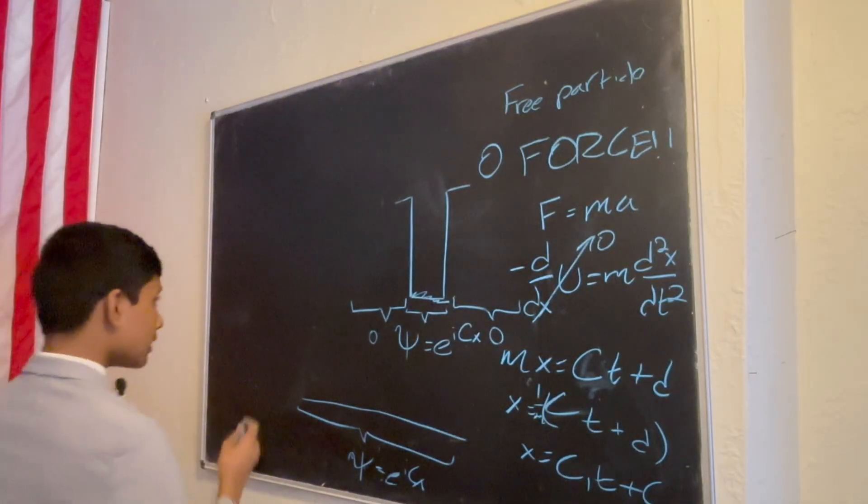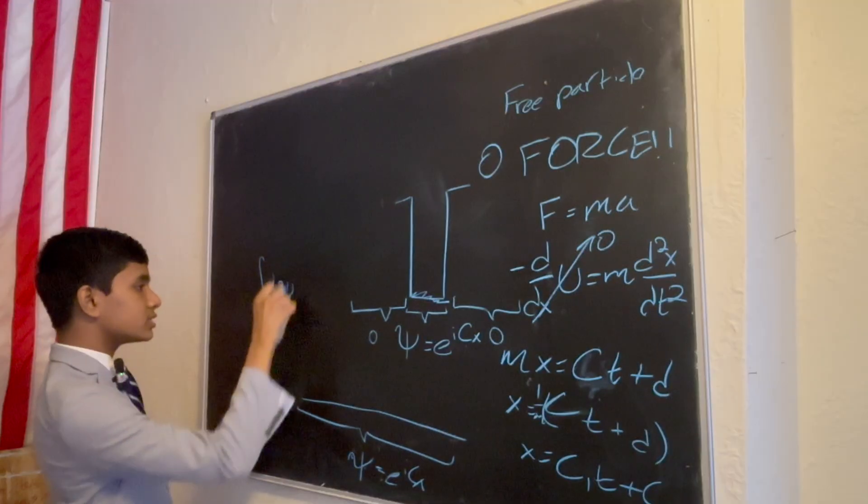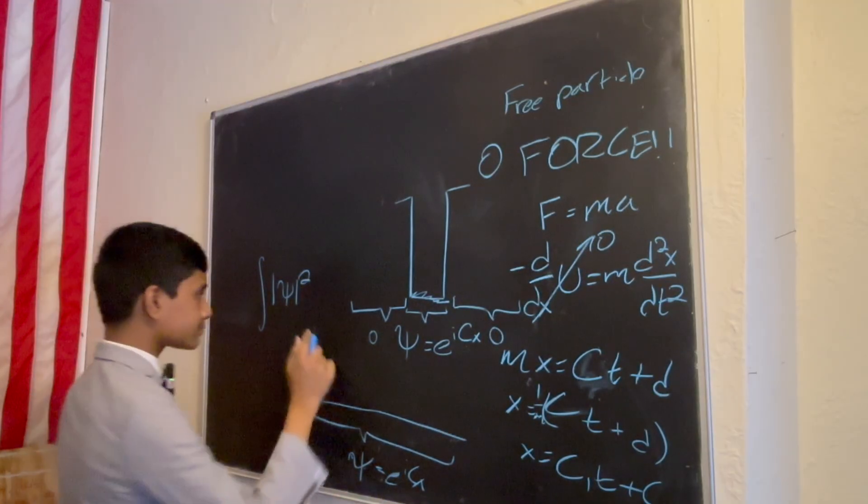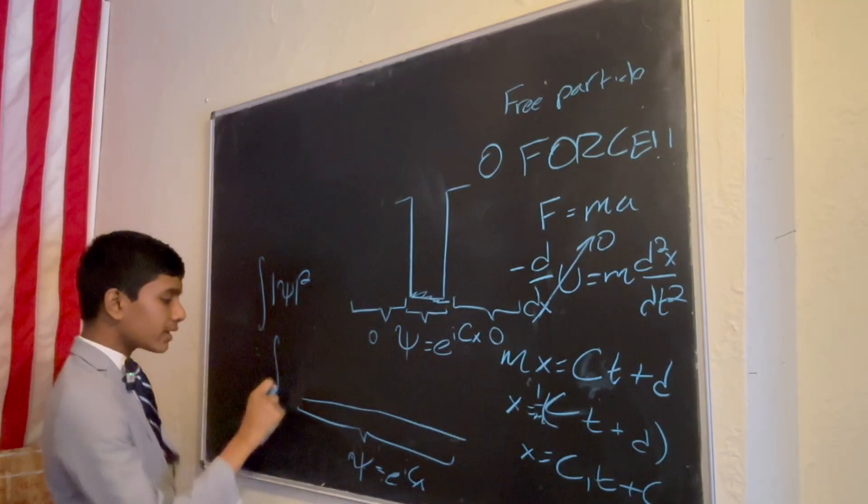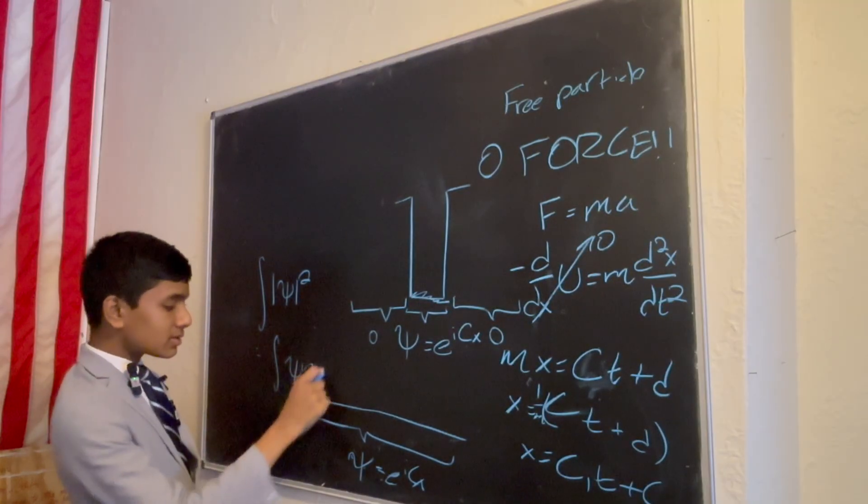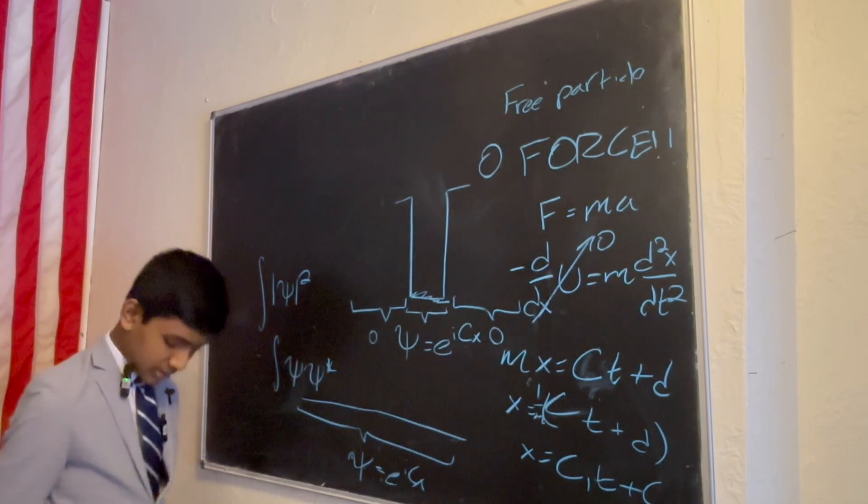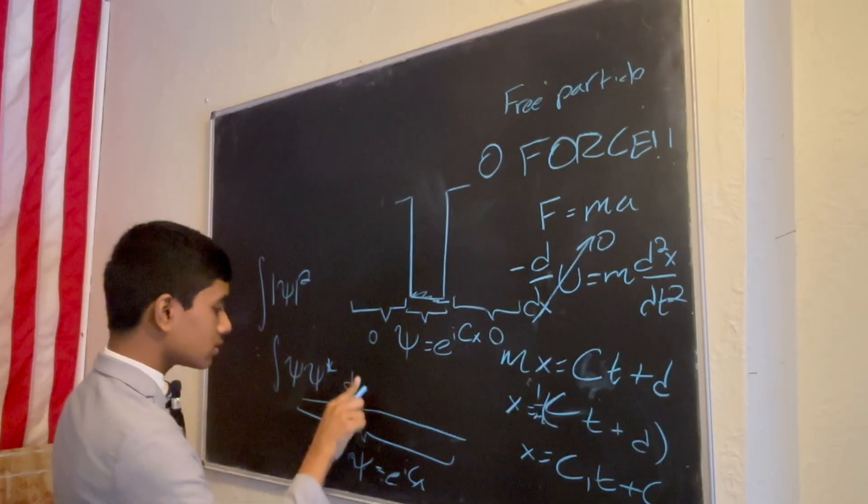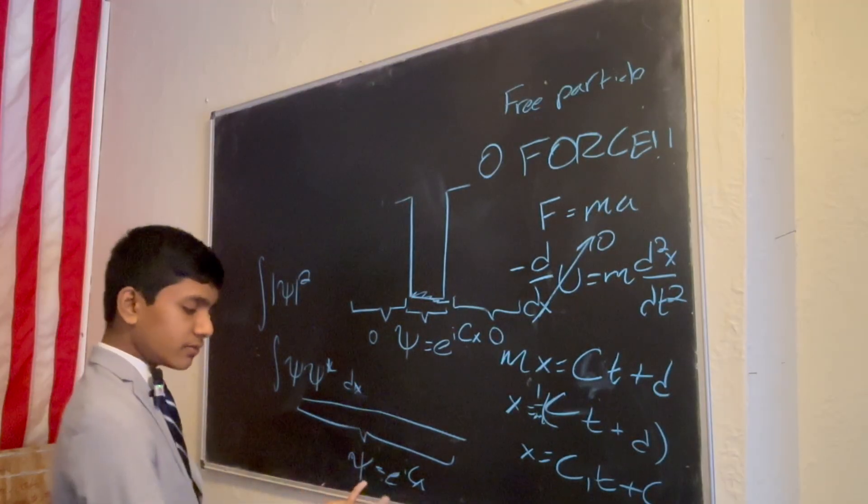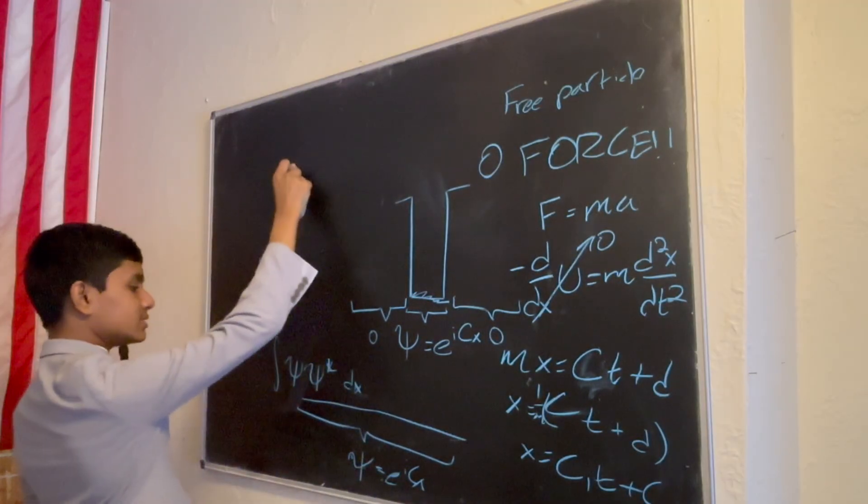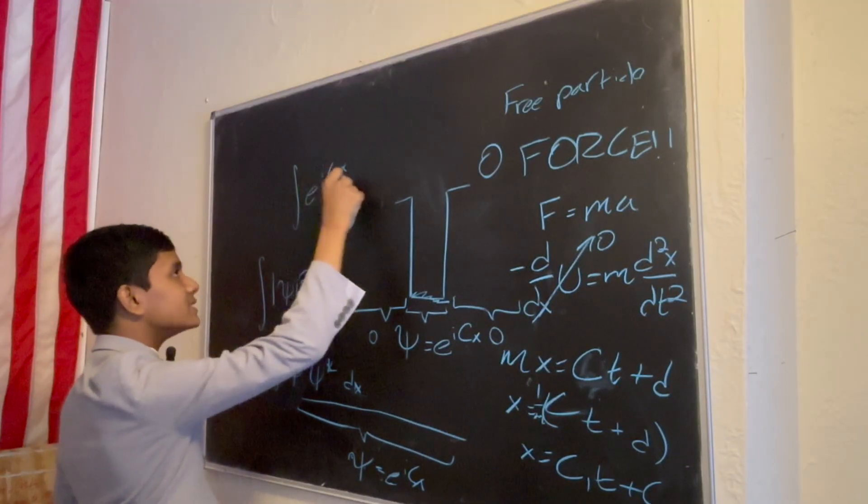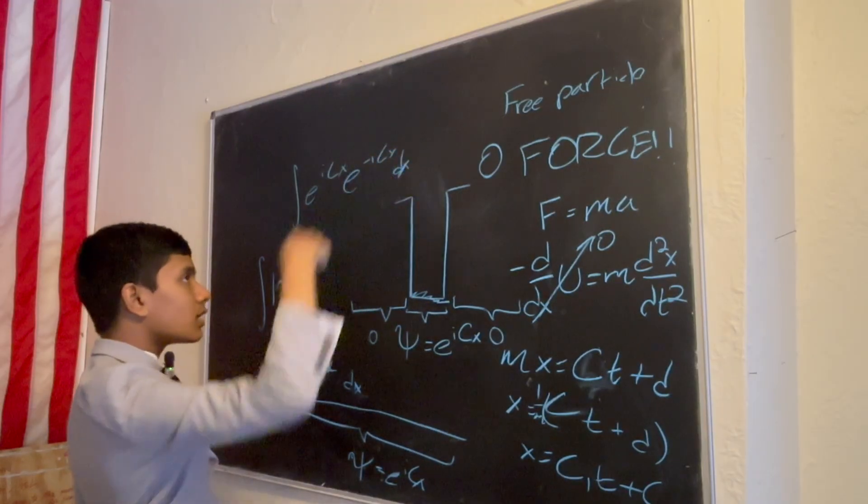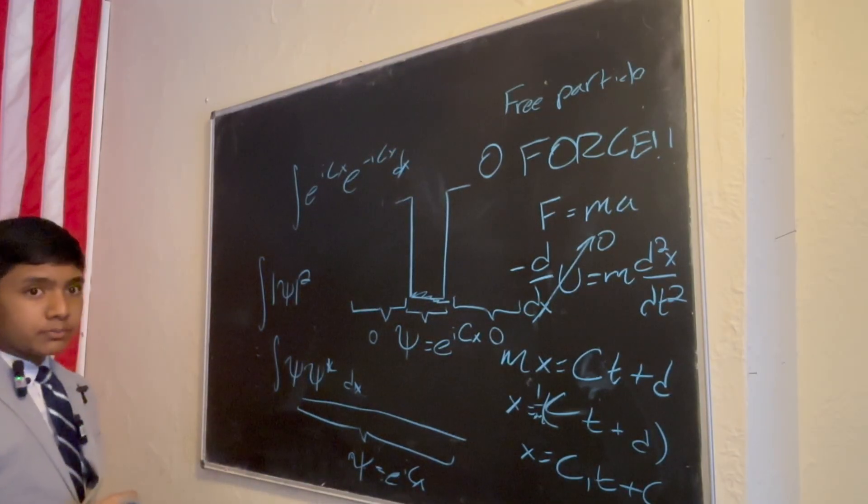Why? Because, if you take the integral of the modulus squared, well, what's the modulus of this? That's better written as the function times its conjugate. And, the conjugate of e to the i cx is just e to the negative i cx. And, wait a minute.